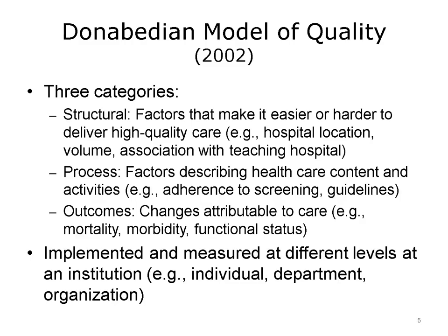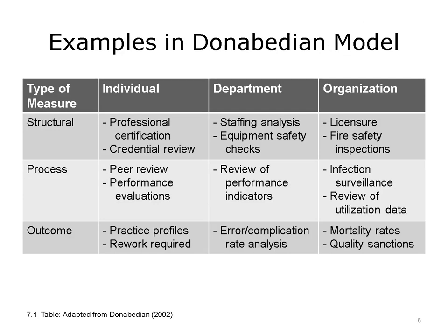These factors are implemented and measured at different levels within an institution, such as the individual practitioner level, the department level, and the organization as a whole. Structural measures include whether individuals are professionally certified, whether departments have appropriate staffing, and whether an organization has various licensures. Process measures include performance evaluation of individuals, monitoring of their productivity, and reviewing performance indicators at the department level, such as how much screening they have done and adherence to guidelines.